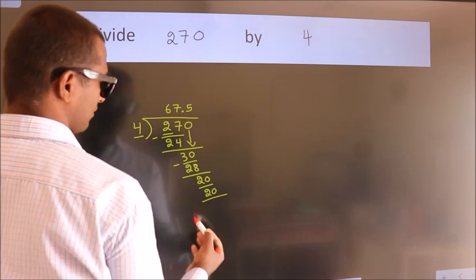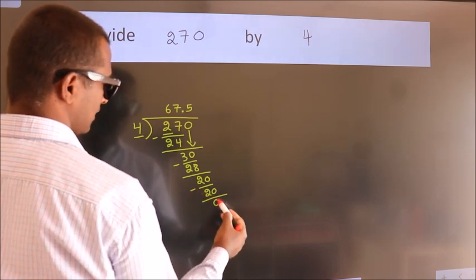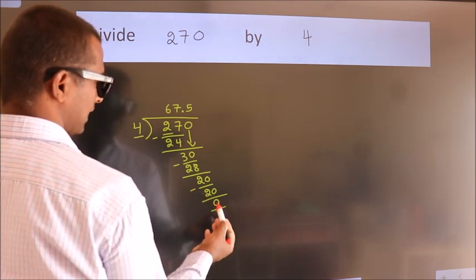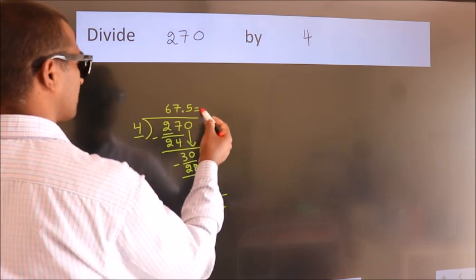Now we subtract. We get 0. We got remainder 0. So this is our quotient.